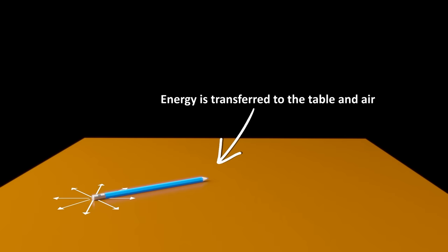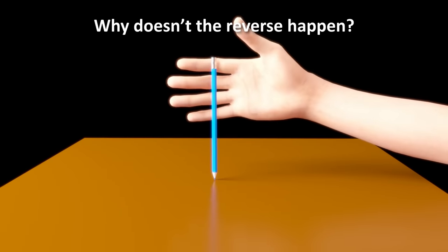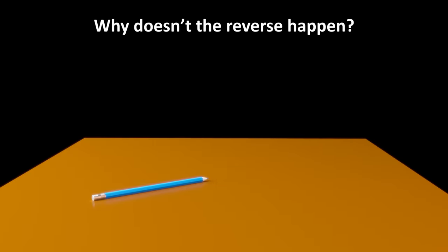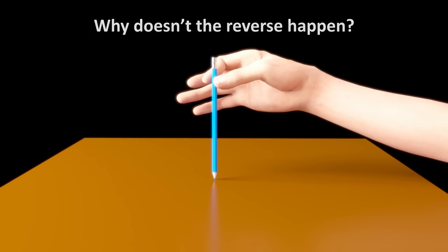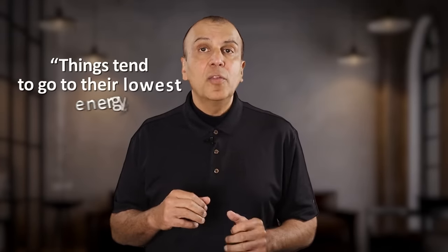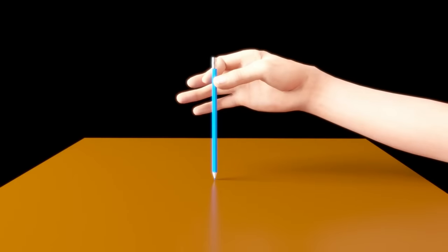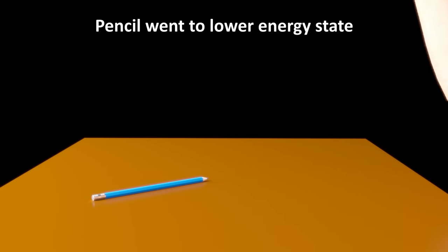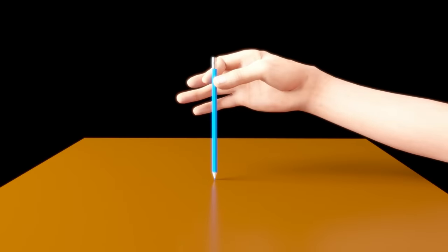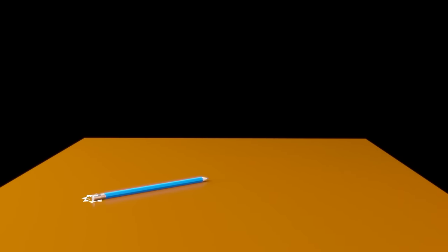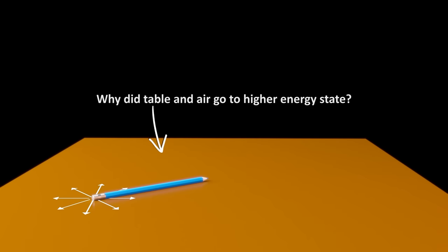But why did this transfer of energy happen? Why doesn't the reverse happen? Say the pencil was lying flat on the table. Why doesn't the energy of the air and heat configure itself in such a way that it results in the pencil standing up? Energy would be conserved in that case too. You might say, well, things just tend to go to their lowest energy state. Well, it is true that the pencil went from a high energy state to a lower energy state. But the table and air went from a lower energy state to a high energy state. No change in overall energy occurred. So we can't really say that this happened because everything wants to go to a lower energy state. Because if that were the case, then why did the table and air go to a higher energy state? Something else has to be happening here.